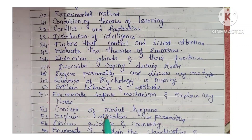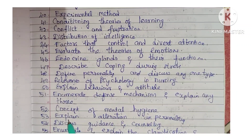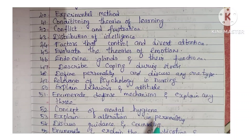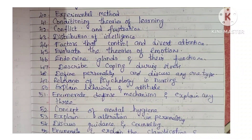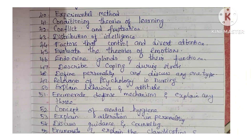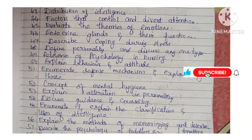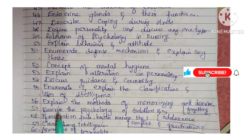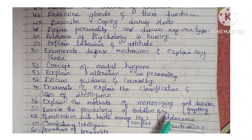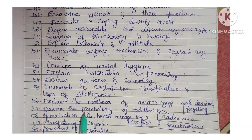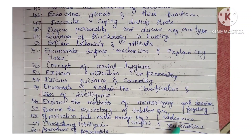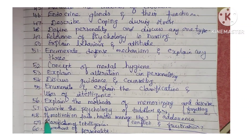Next: concept of mental hygiene. Next: explain alteration in personality. Next: discuss guidance and counseling. Next: enumerate and explain the classification and uses of intelligence. Next: methods of memorizing and describe forgetting. Next: describe the psychology of toddler and adolescence.